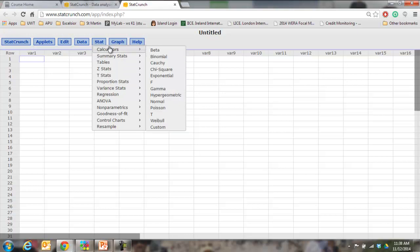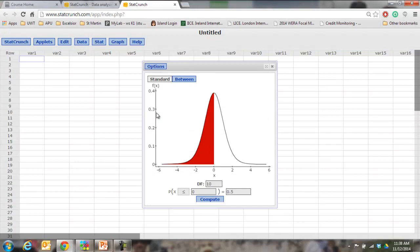And then the other main thing we do with StatCrunch right now is we find area under the curve or we find values that correspond to areas under the curve, and that's where we use the calculators. These are like electronic versions of tables. They're basically just electronic versions of a probability distribution.